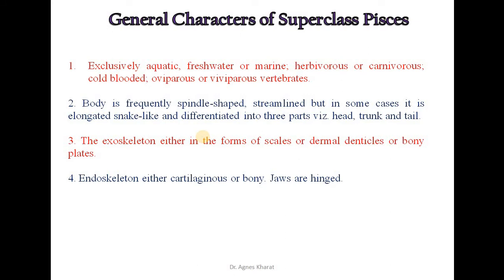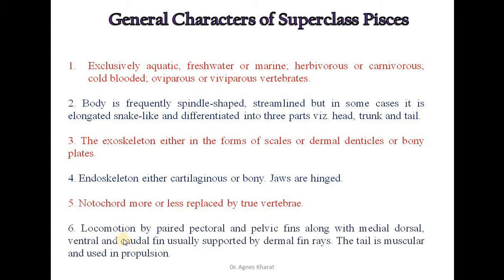The endoskeleton is either cartilaginous or bony. Jaws are generally hinged. The notochord is more or less replaced by true vertebrae. Locomotion is by paired pectoral and pelvic fins along with medial, dorsal, ventral, and caudal fins usually supported by dermal fin rays. The tail is muscular and is used in propulsion.